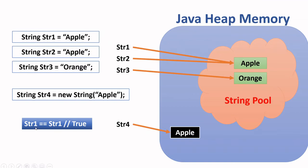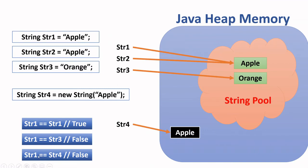Let's take a look at str1 == str2. Is str1 equal to str2? The answer is true, because str1 and str2 both point at the same value, which is apple. Now, str1 == str3 — think about whether they point at the same value. str1 and str3 point at two different values, so they're not equal — that's false. And str1 == str4 is also false. Even though the value is apple in both cases, str1 is pointing at the apple in the string pool and str4 is pointing at the apple on the heap, so technically they're not equal.